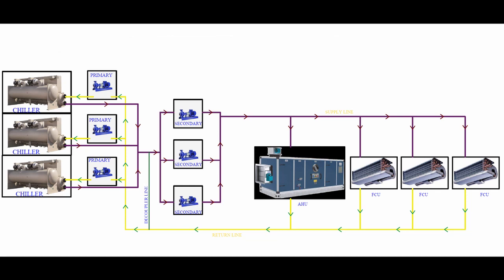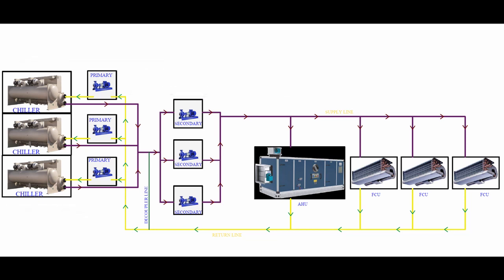First of all, we can go through a primary-secondary chiller loop. This is the chiller. These are primary pumps which will help to circulate the water through the chiller. And these are secondaries. From the chiller outlet, it will take suction and will discharge the water through the air side equipment in the building — air side equipment like air handling unit (AHU) or fan coil unit (FCU), etc.